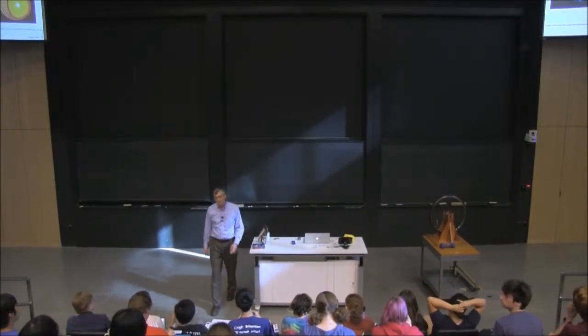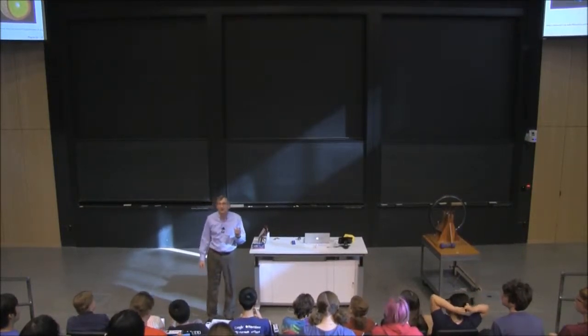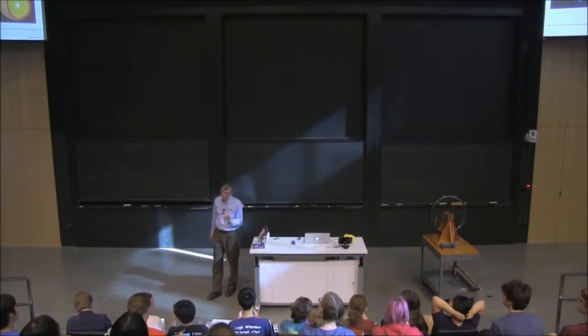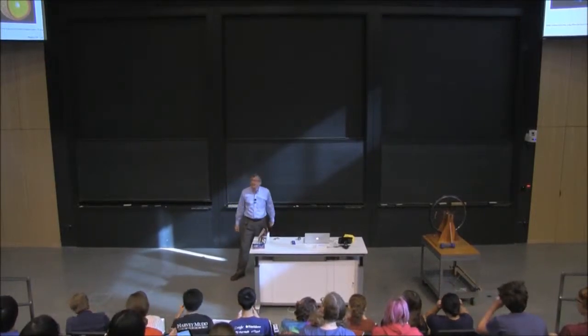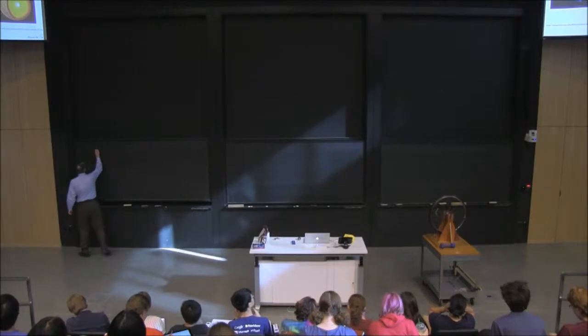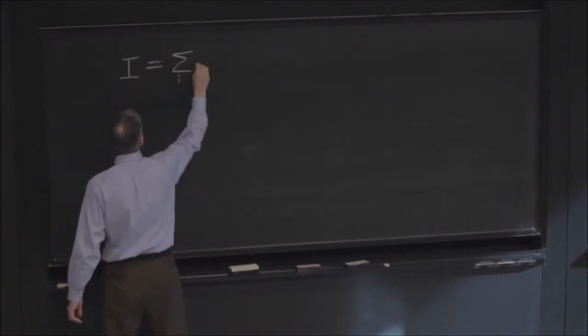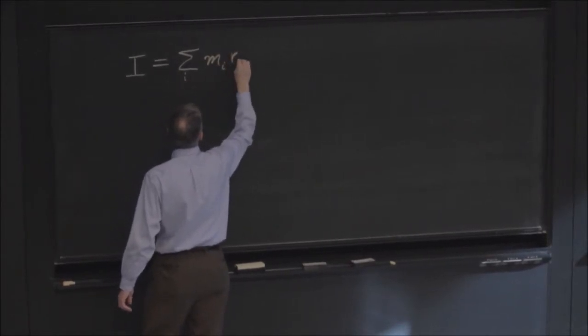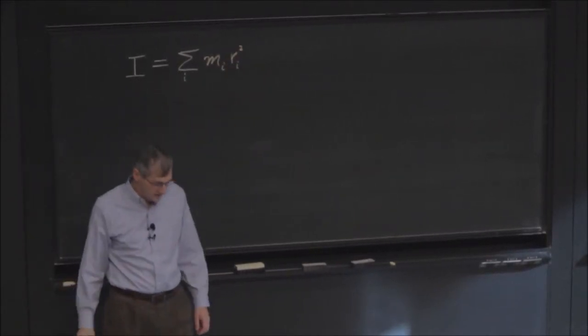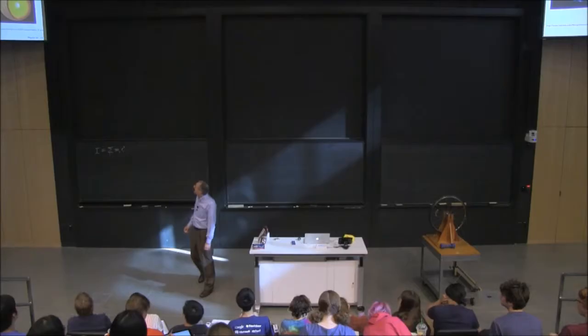is called, goes by a couple of different names, moment of inertia or rotational inertia. And we saw that it had the expression i is equal to the sum over the masses m sub i r sub i squared, where r sub i was the distance from the spin axis to the mass point in question.